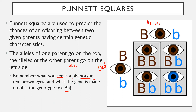If we look at this Punnett Square, the mom has a brown eye allele as well as a blue eye allele. But because brown eyes are dominant over blue eyes, the mom actually ends up having brown eyes altogether — you don't even see the blue eye allele. So connecting it back to phenotype and genotype: mom's phenotype is brown eyes, and mom's genotype is capital B, lowercase b — those are the actual alleles she is carrying. Dad is the exact same way: he's got brown eyes, but he is carrying a blue eye recessive allele.